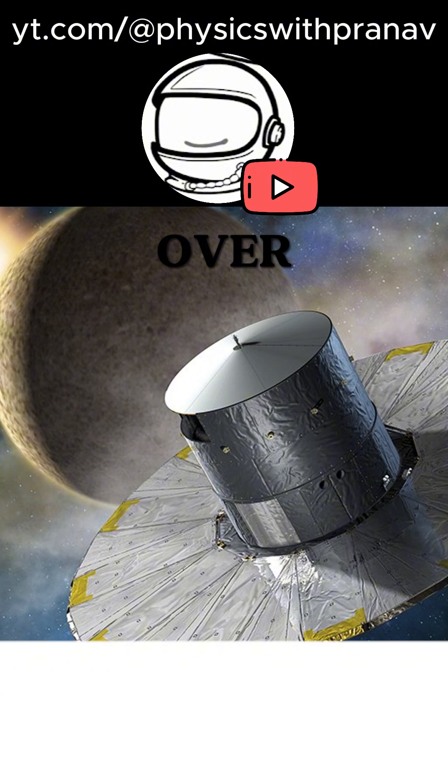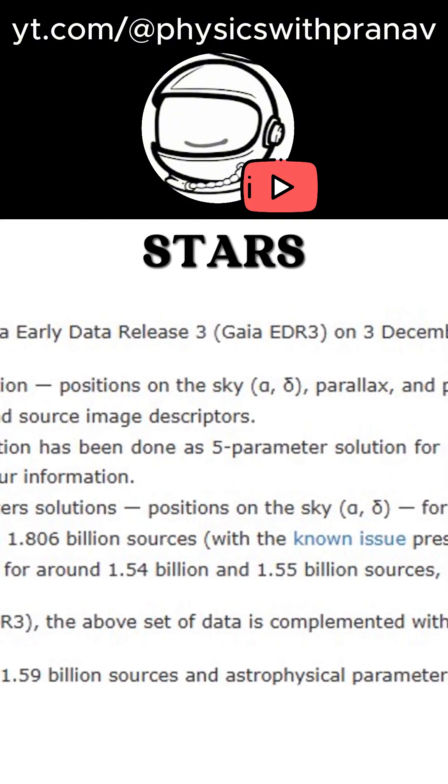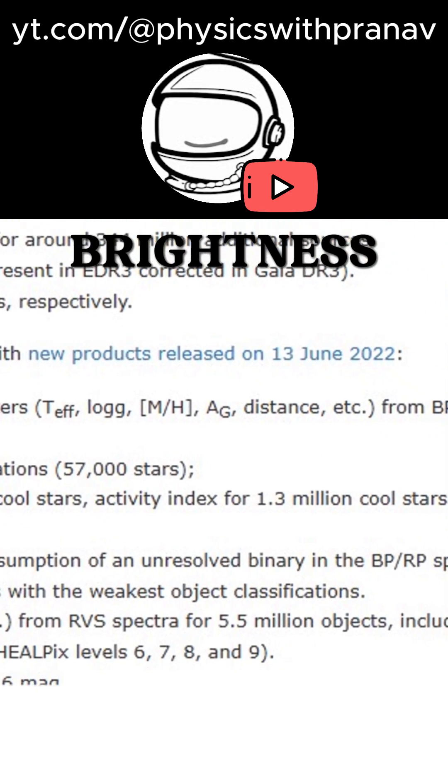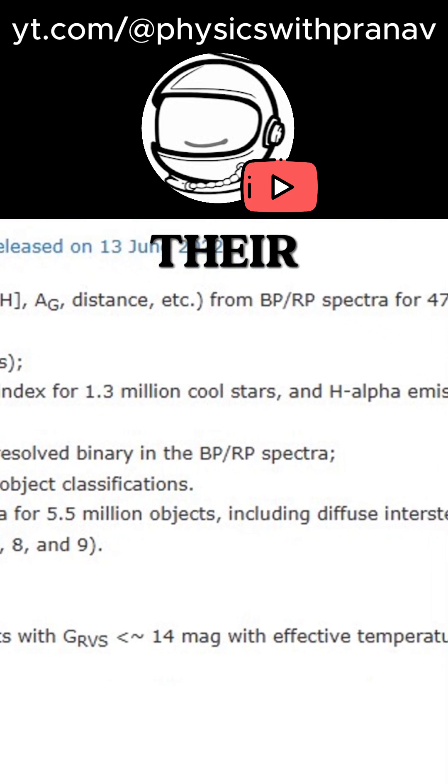We're talking the positions of over 1.8 billion stars, including the velocities and directions they're moving, the brightness, their temperature, even their chemical composition.